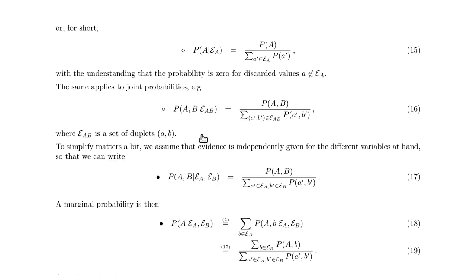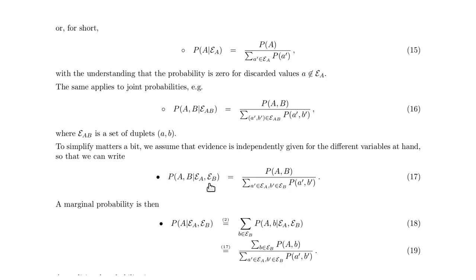To simplify matters, I will usually assume that the evidence is independent for the two variables, meaning I can write E_{A,B} as E_A comma E_B. Then the sum simply goes over all values of A that are still possible and all values of B that are still possible. We can derive similar equations as before with partial evidence. For instance, if the joint probability P of A, B given the evidence for A and B is given, we can calculate the marginal probability over A by simply summing over all values of B.